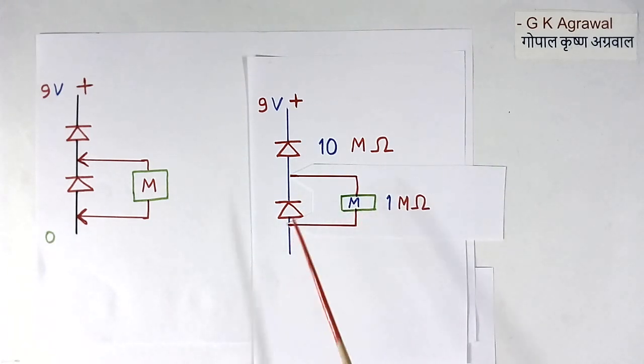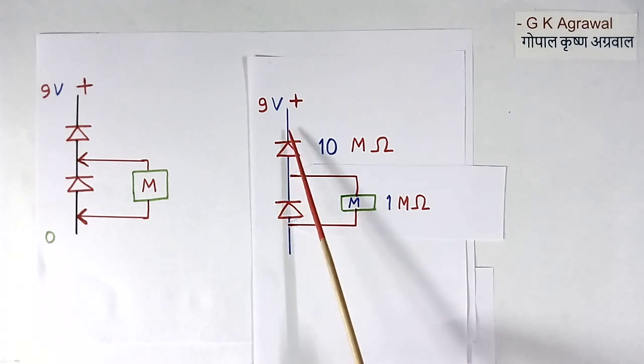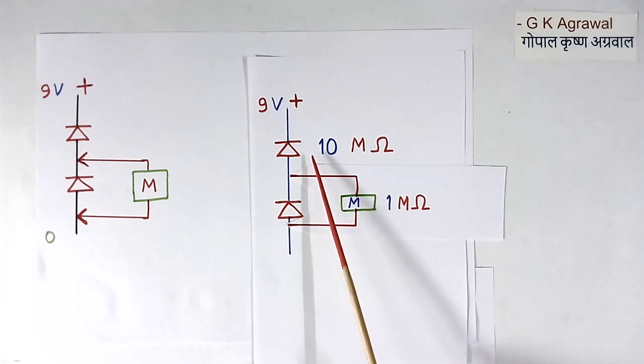Like this. Now resistance across the diode is less, 1M. Resistance across the diode is more. So here multimeter will be less because less voltage will come.